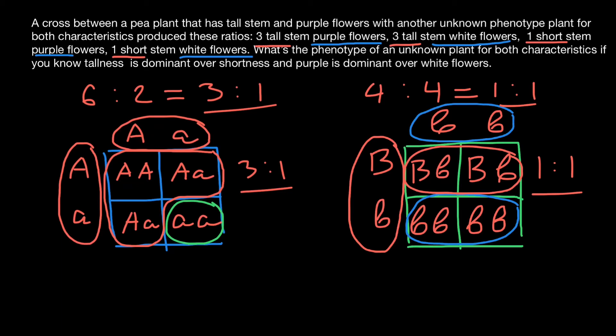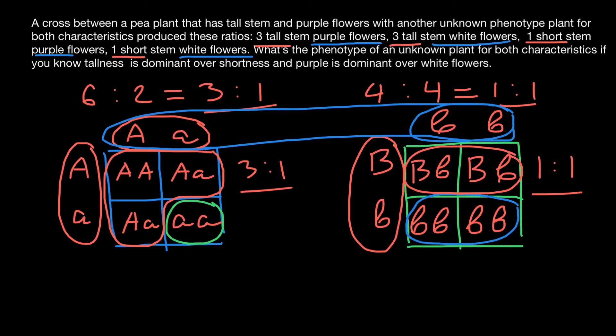So now we can state the phenotype and genotype of the unknown parent: for tallness it is heterozygous, and for flower color it is homozygous recessive. The genotype is heterozygous tall with white flowers, while the known plant is tall with purple flowers.